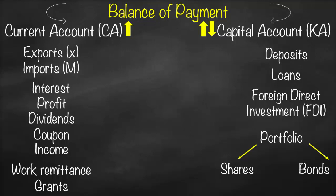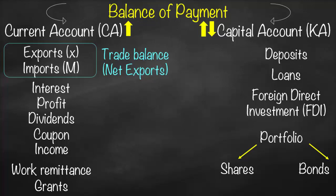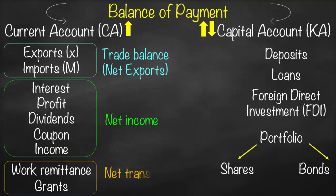Within current account, items can be further classified: exports and imports together form the trade balance (same as net exports); interest, profit, dividends, coupon payments, and consultancy income together form net income; and work remittance plus grants form net transfer. For capital account, the main items are foreign direct investment (FDI) and portfolio investment.